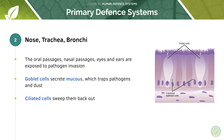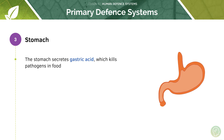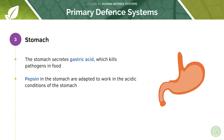Now let's move on to a third example of a primary defence system — the stomach. The stomach is an acidic environment. Cells in the lining of the stomach secrete gastric acid which acts to kill pathogens in food. In addition there are also enzymes in the stomach called pepsins that are adapted to work in the acidic conditions of the stomach.